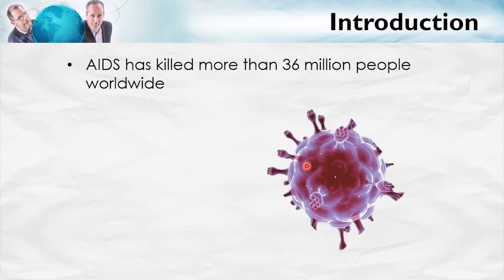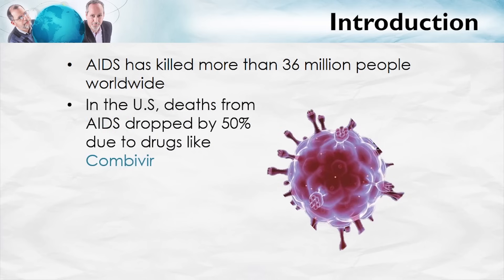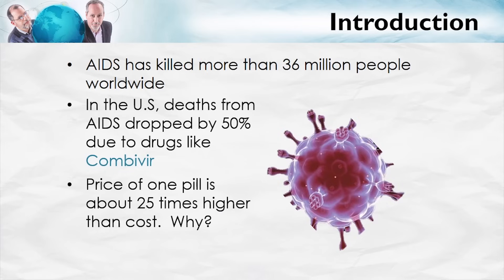This is the AIDS virus. Worldwide, it has killed more than 36 million people. In the United States, however, AIDS is no longer the death sentence that it once was. Beginning in the mid-1990s, death rates from AIDS began to fall dramatically with the introduction of new drugs, such as Combivir. These new drugs are great, but they're expensive — and not because it costs a lot to manufacture them. The per-pill costs of production are actually quite low. Instead, these drugs are expensive because of the subject matter of this chapter: Monopoly.